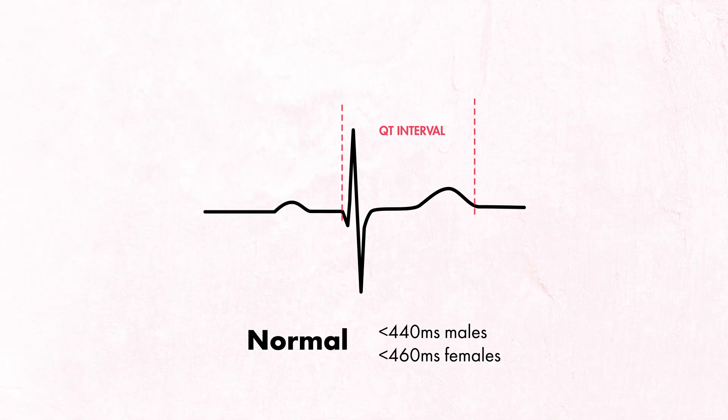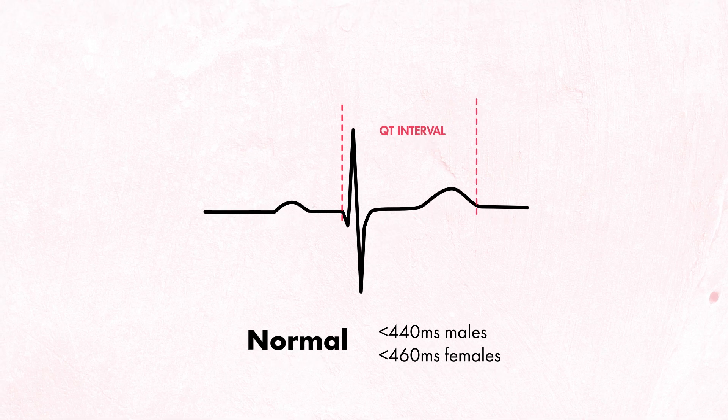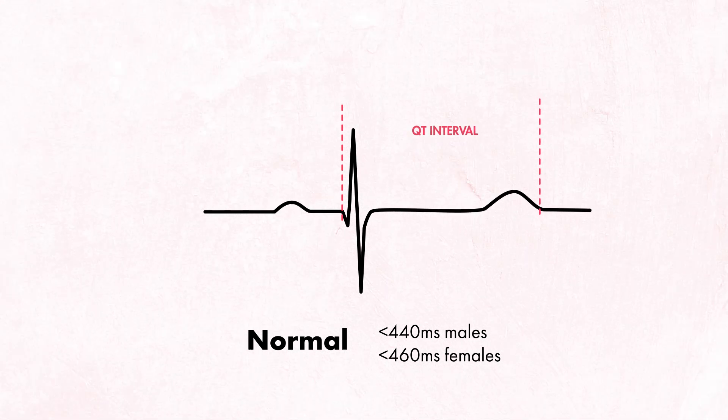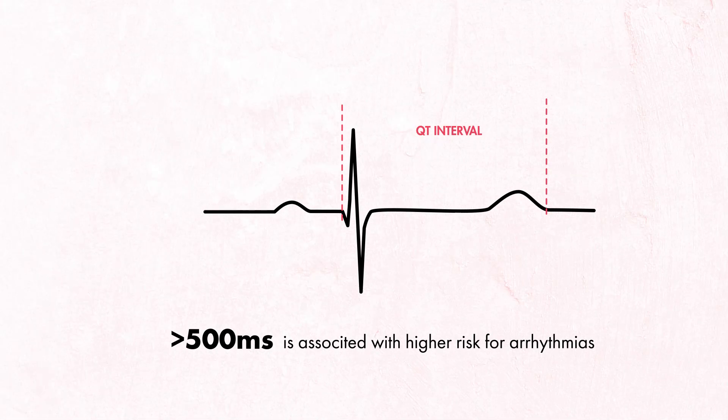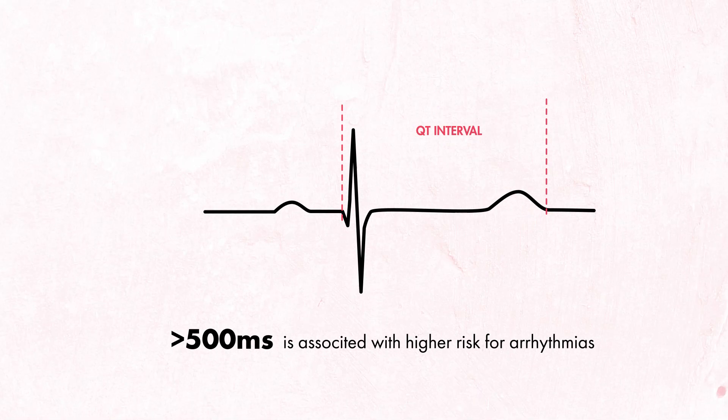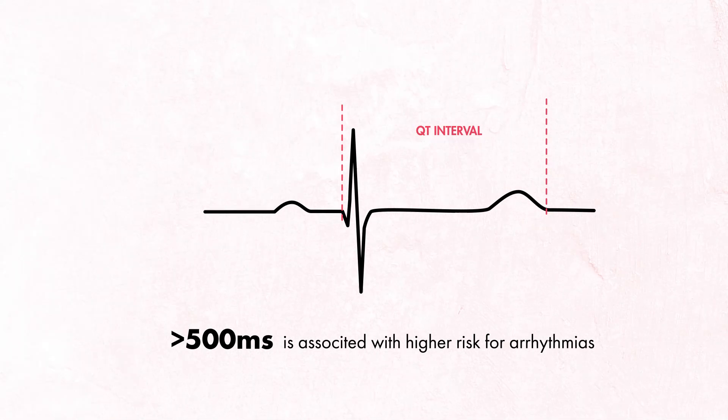Any longer is considered prolonged, with QTc intervals greater than 500 ms putting people at risk for arrhythmias like torsades.